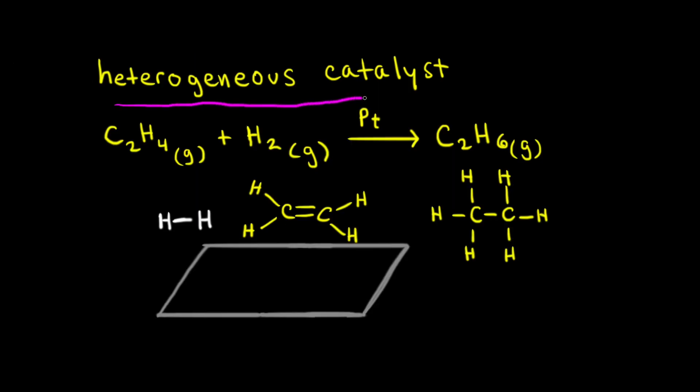A heterogeneous catalyst is a catalyst that's present in a different phase from the reactants in a reaction mixture. As an example, let's look at a hydrogenation reaction. In this reaction, ethene reacts with hydrogen on a surface of platinum to form ethane. Since the platinum is in the solid form and our reactants are in the gaseous state, the platinum is an example of a heterogeneous catalyst.